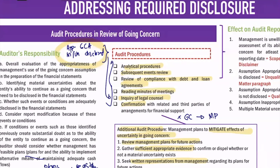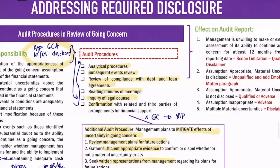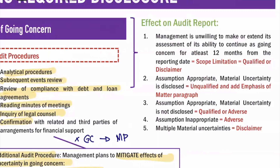There are two main problems here: whether the going concern assumption is appropriate or inappropriate, and whether material uncertainties are disclosed. First, determine whether the going concern assumption is appropriate or inappropriate. If it is inappropriate — meaning management disclosed they are going concern but after testing it turns out they are not — then your audit report carries an adverse opinion.